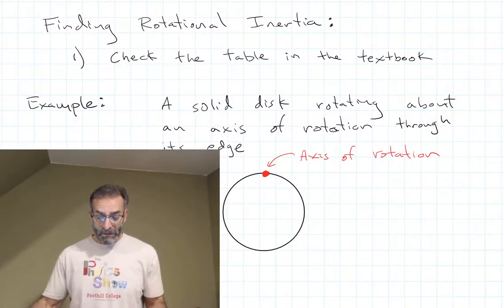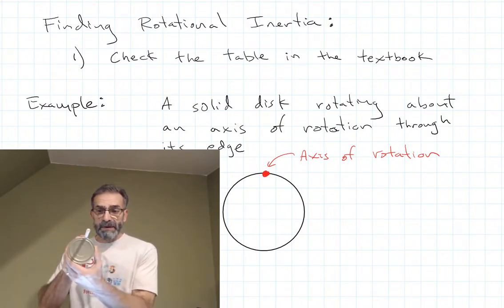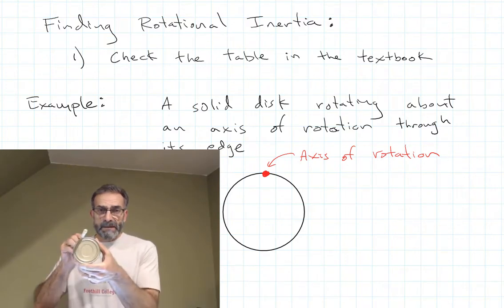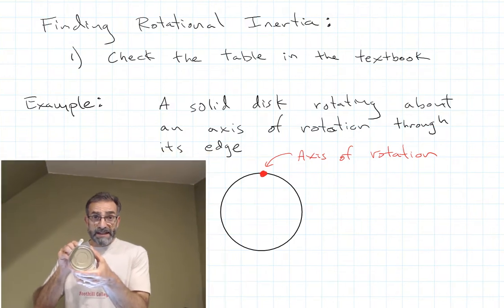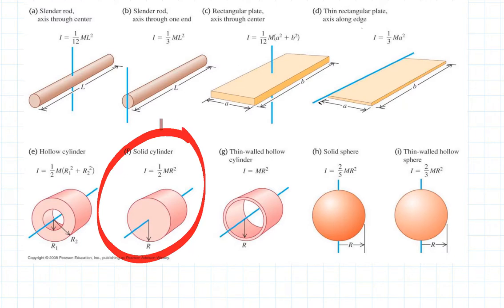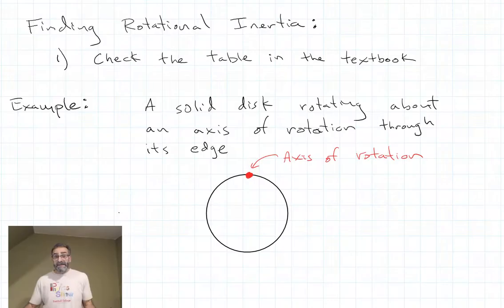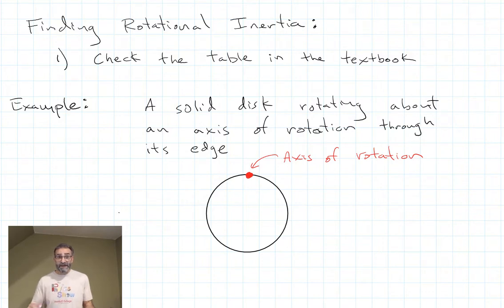Now let's take a look at this example. We have a solid disc rotating about an axis of rotation that passes through the rim, the edge of the disc. So we look at our table and see if that's there. The only solid disc we have is rotating through its center point, not through an axis at the edge like this. So that brings us to step two: can we use the table in conjunction with the parallel axis theorem?